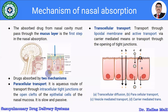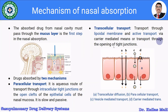Drugs are absorbed through the nasal cavity by two main mechanisms: paracellular transport and transcellular transport. Paracellular transport is an aqueous route through intercellular tight junctions or open clefts of the epithelial cells of the nasal mucosa — it is slow and passive. Transcellular transport involves transport through the lipoidal membrane, active transport via carrier-mediated transport, or transport through the opening of tight junctions.